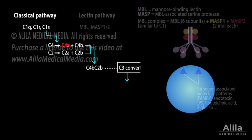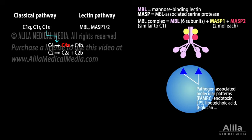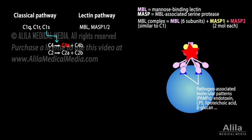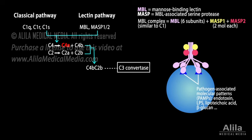The lectin pathway activates when mannose-binding lectin (MBL) binds to highly conserved carbohydrate motifs on the surface of most pathogens, known as pathogen-associated molecular patterns. The binding activates MBL-associated serine proteases, which again cleave C4 and C2 to form the C3 convertase.